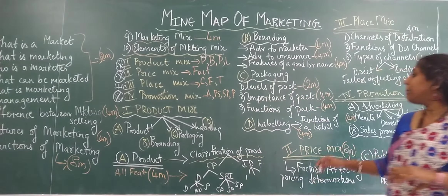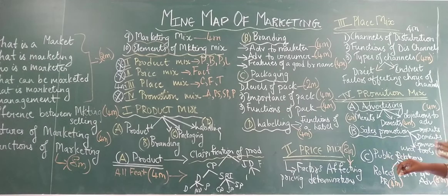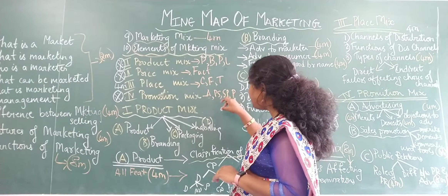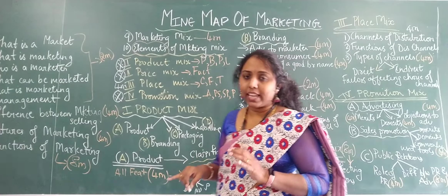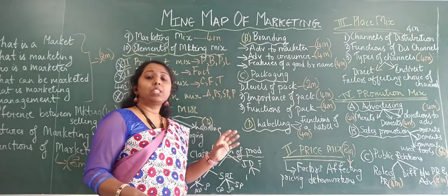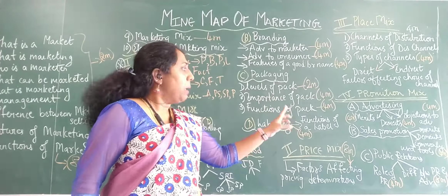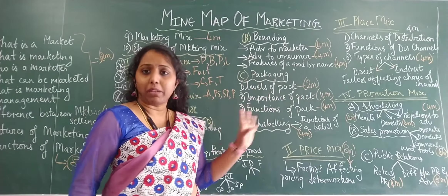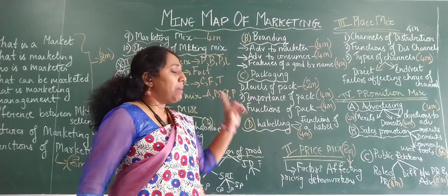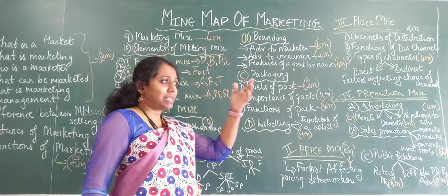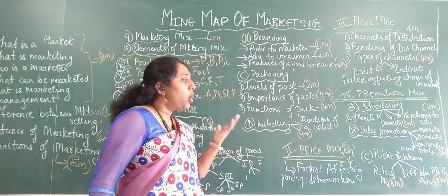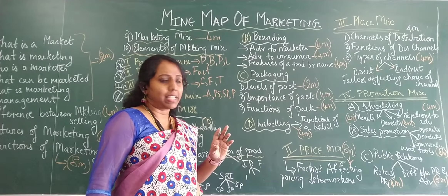Promotion mix is very very important. Under promotion you have advertising, personal selling, sales promotion, and publicity. Advertising has merits, demerits, and objections to advertising. Merits will come most of the time — please be careful and ensure you learn the topics I'm telling you, because whatever topics I've told have come in the paper. For eight marks, they can ask merits for four marks and objections or demerits of advertising for the remaining four marks.